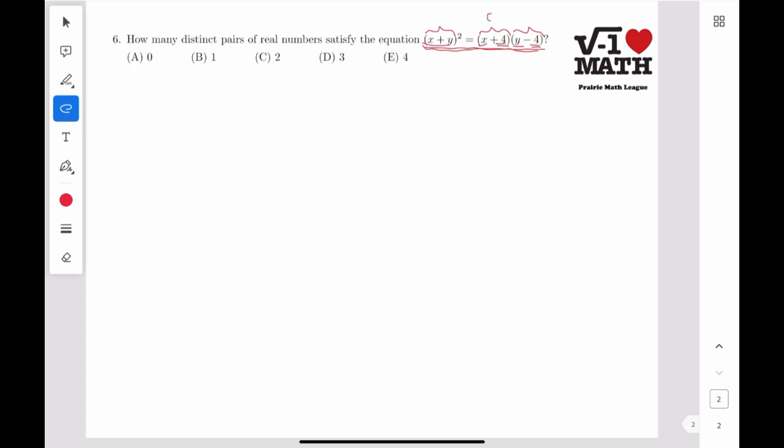So what if we write this as a and b, where a is equal to x plus 4, and b is equal to y minus 4? Then this just becomes a plus b. So our equation simplifies to a plus b squared is equal to a squared plus b squared,